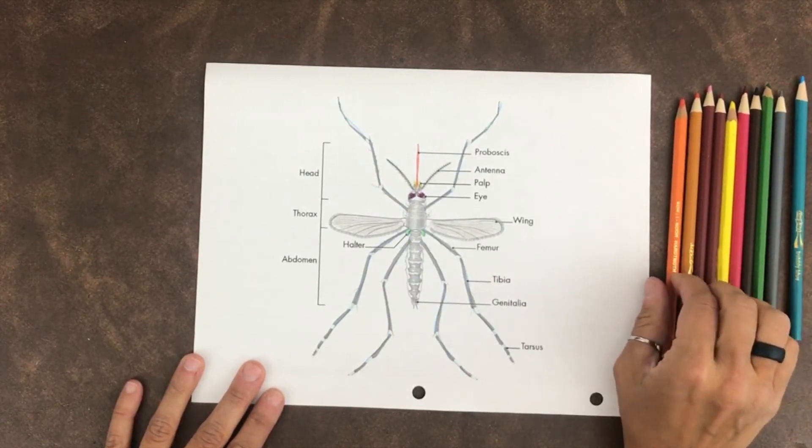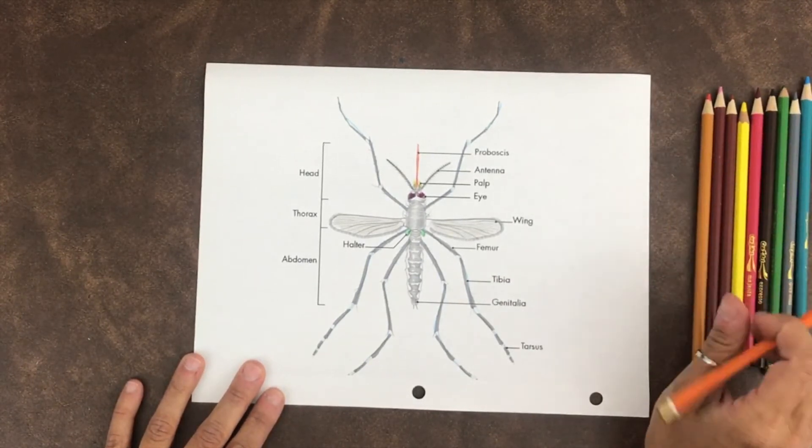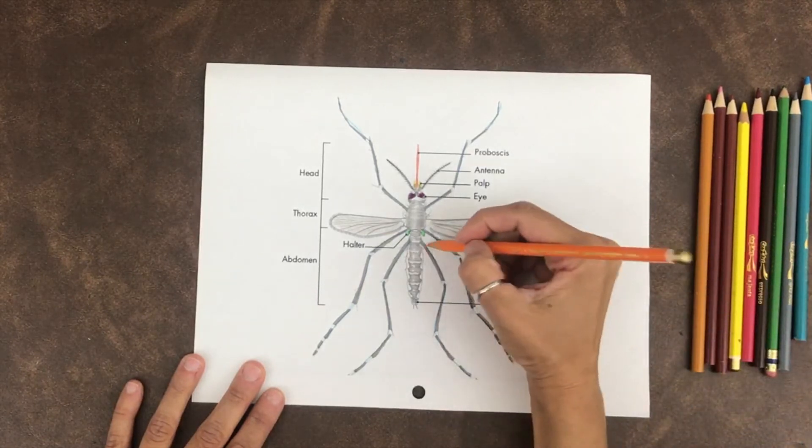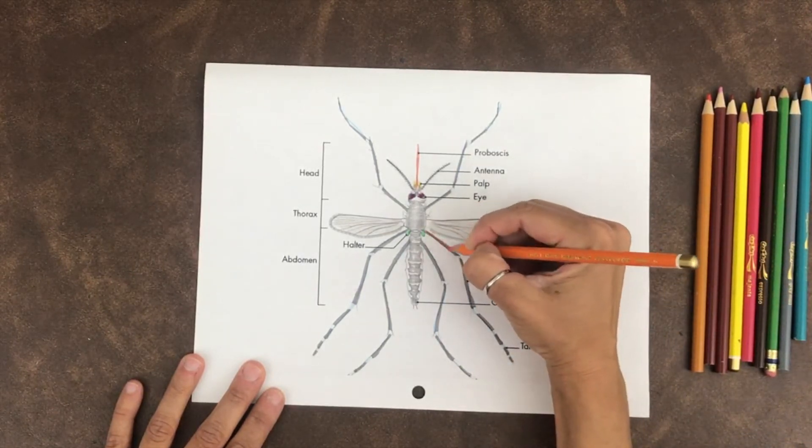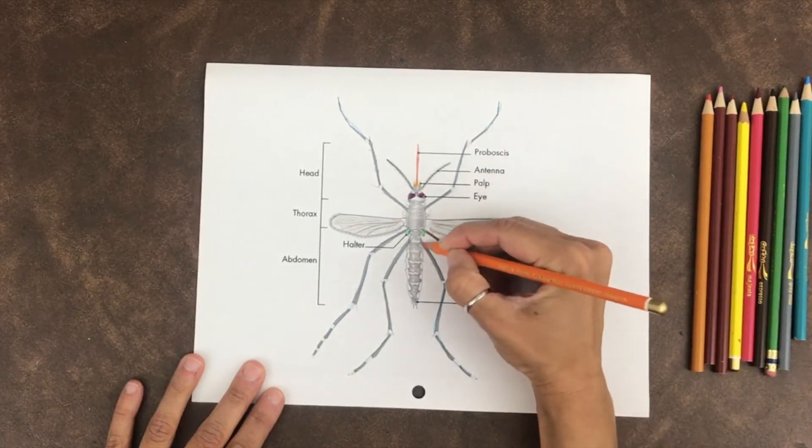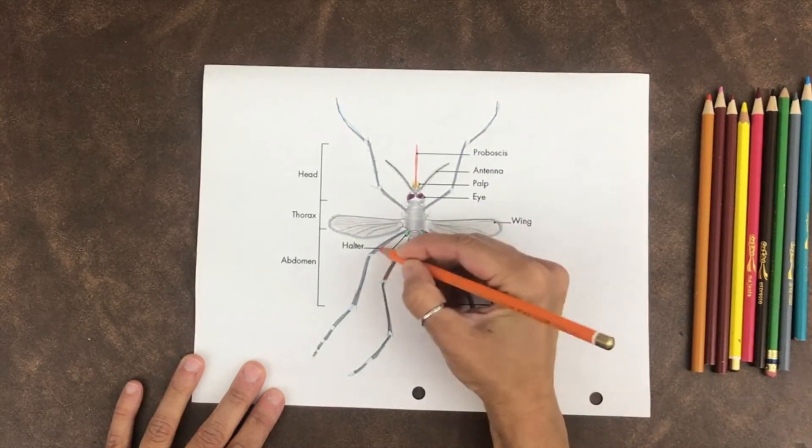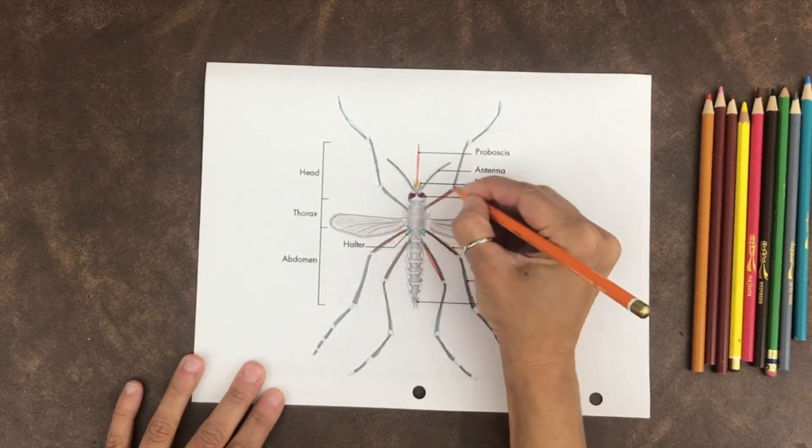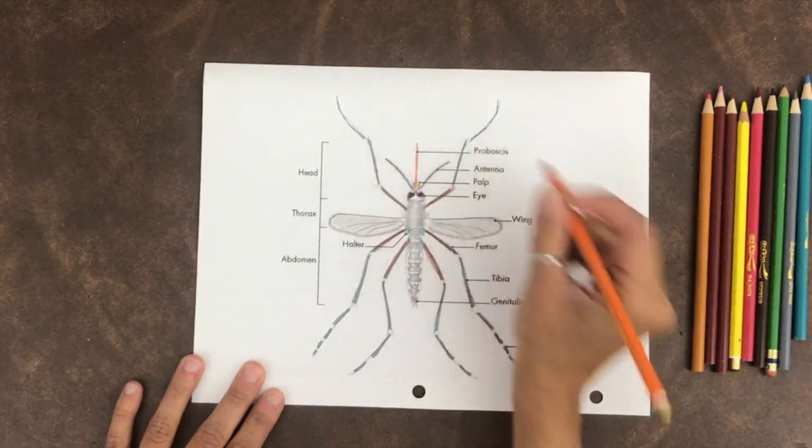Now, just like our legs, the upper part of the leg is called the femur. Each leg has a femur. I'm coloring the femur in orange.